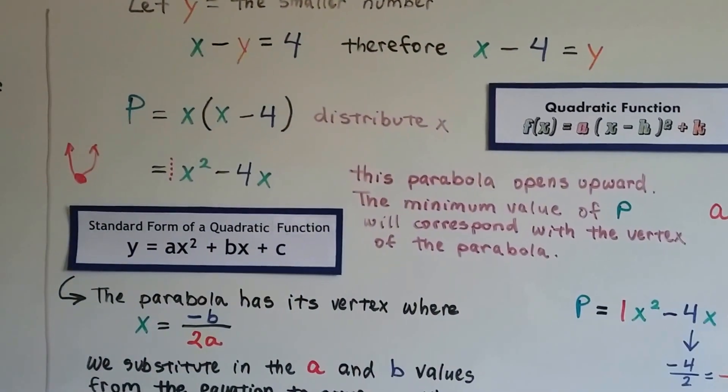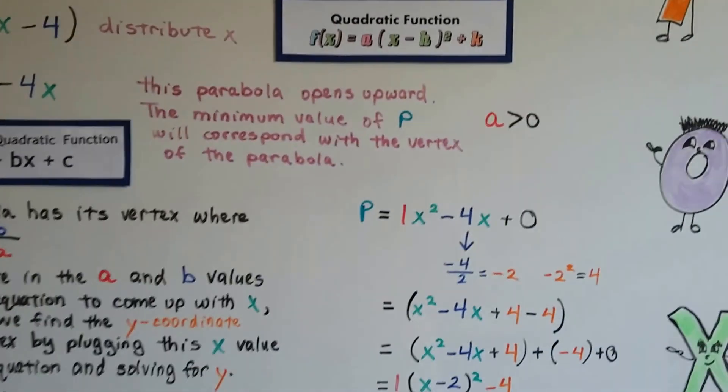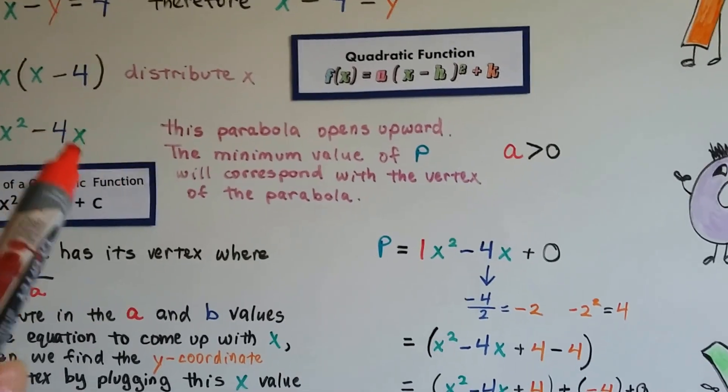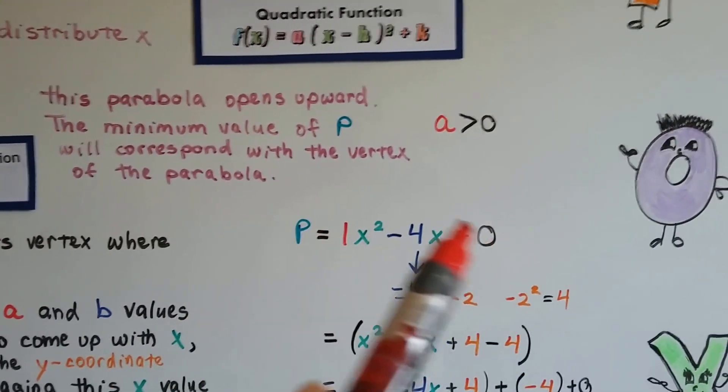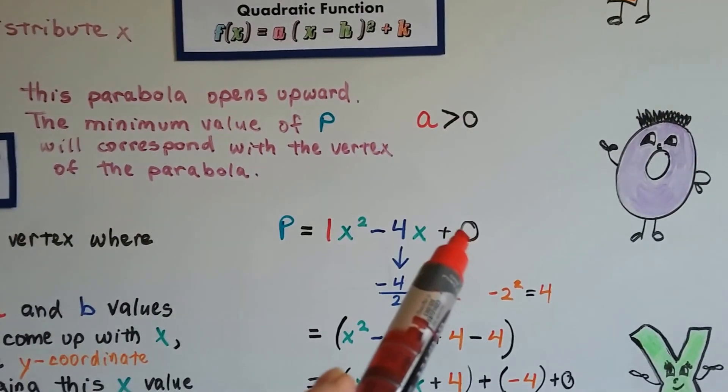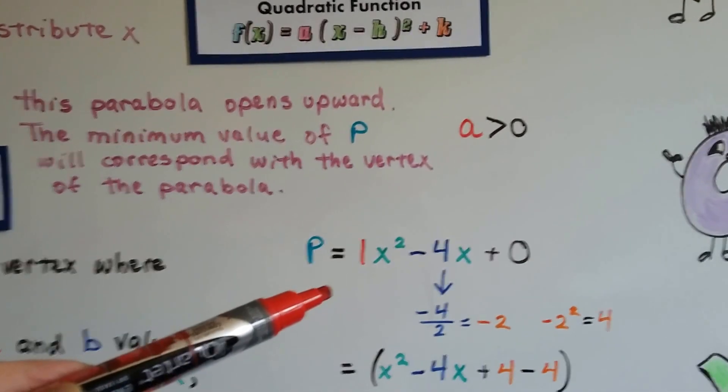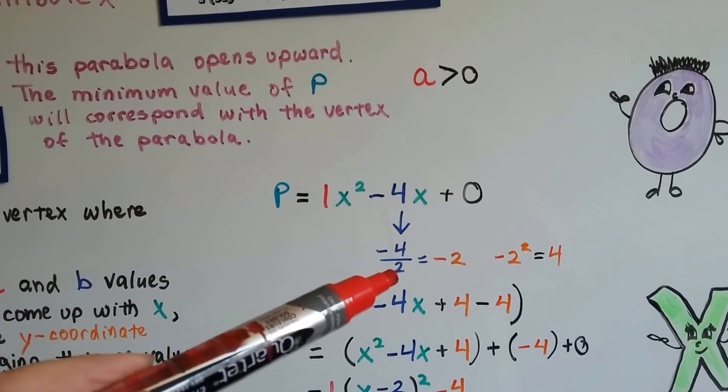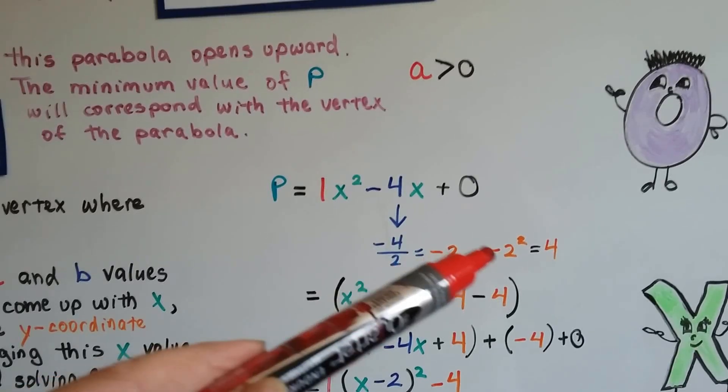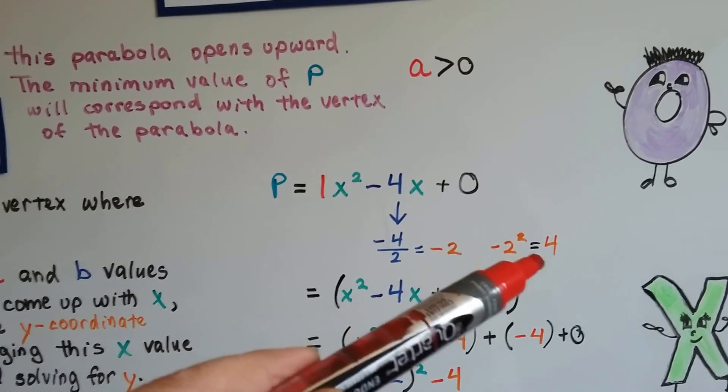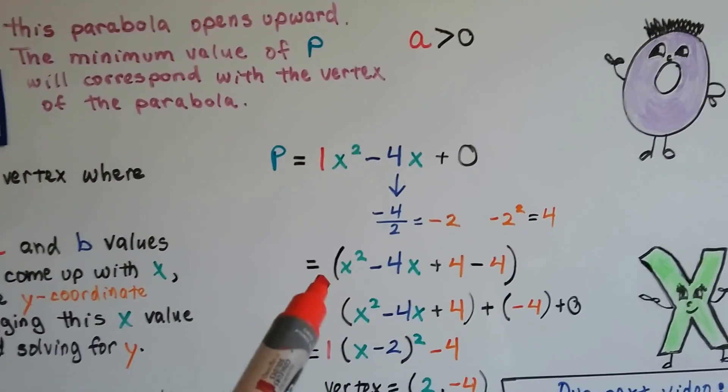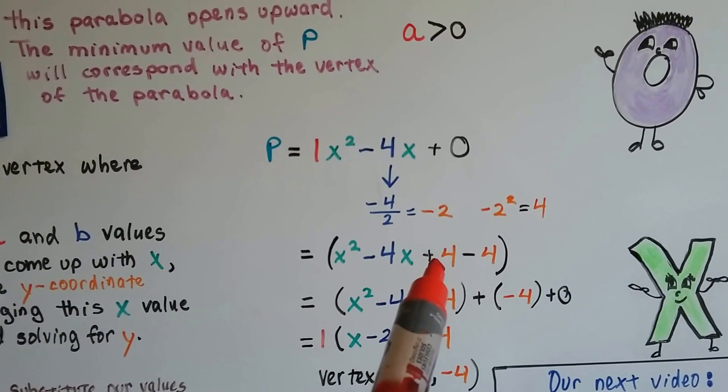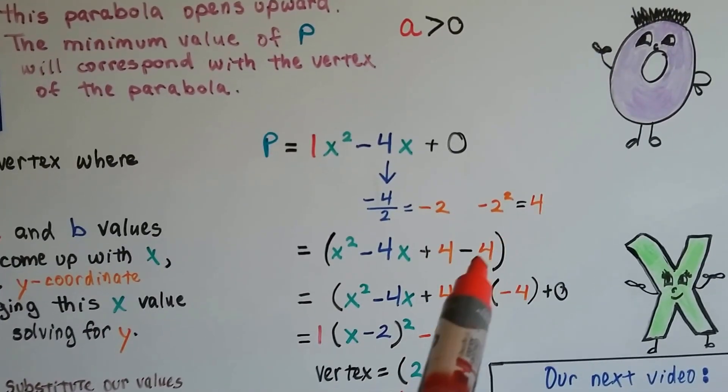There's a couple of different ways to do this. I'm going to show you the way we did in video 9.6a. We've got 1x² - 4x, and we don't have a k value, so I just put a 0 there as a placeholder. We need to complete the square, so we divide -4 in half to get -2, then square that to get 4, a positive 4.